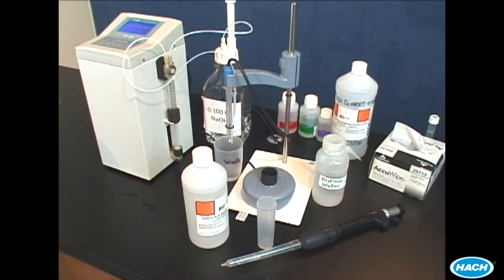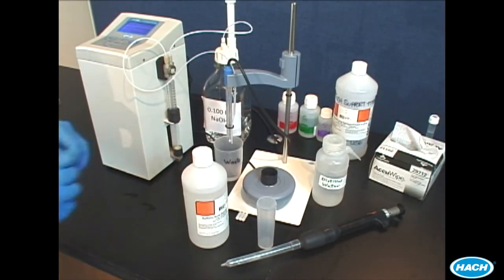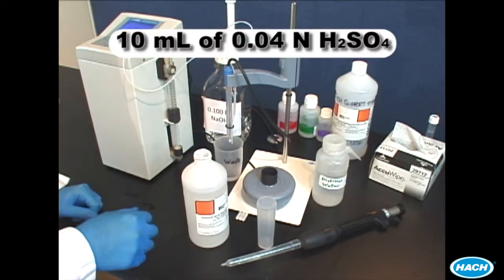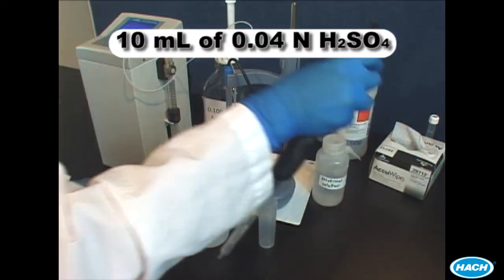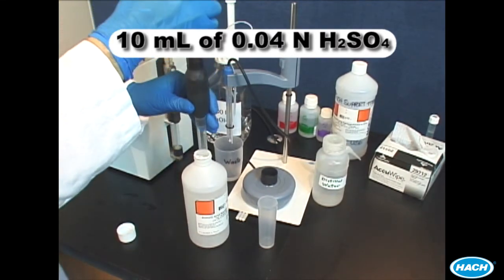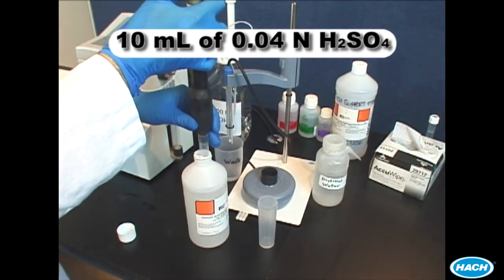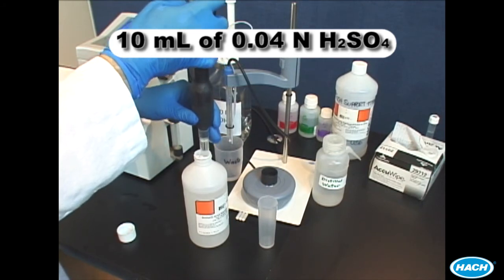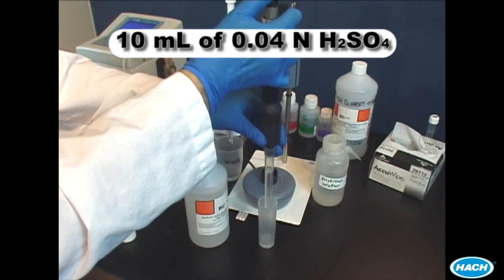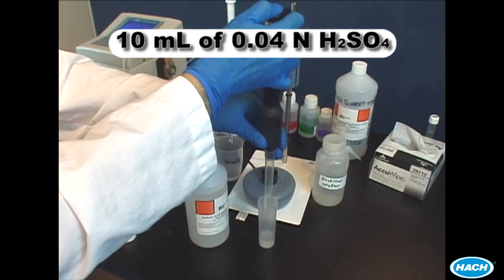You are now ready to measure your sample. For all titration models we are going to use 10 mL of 0.04 normal sulfuric acid standard. Some titration models prompt you for a weight instead of a volume, in which case you will enter 10 grams since 10 mL weighs about 10 grams.